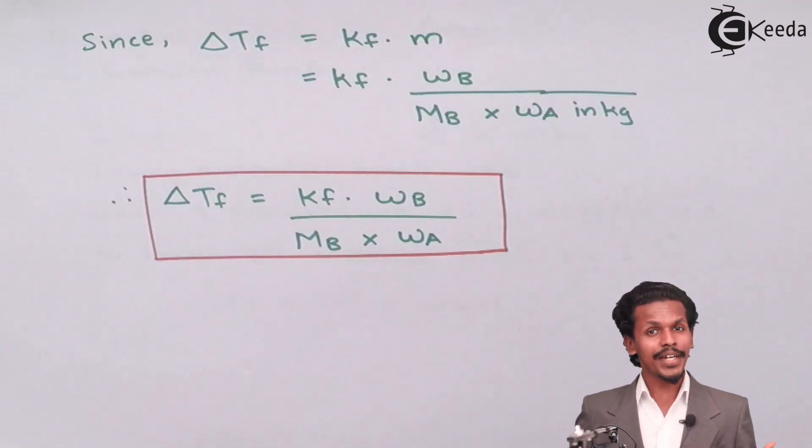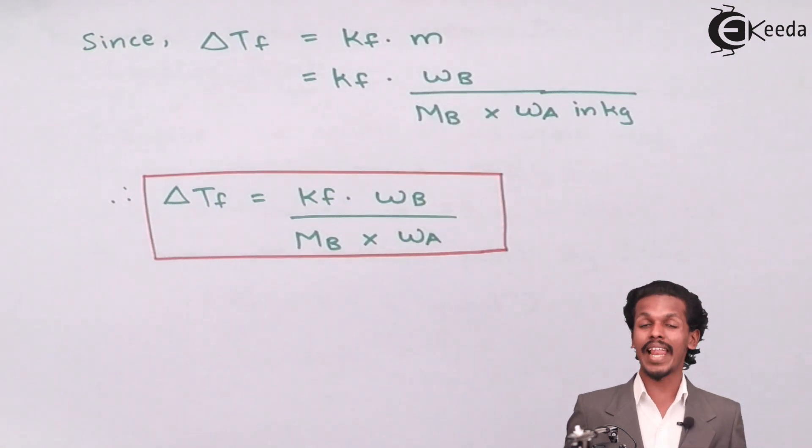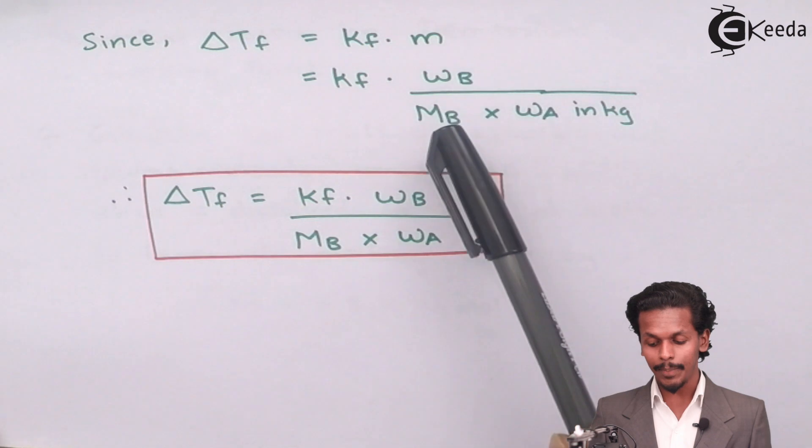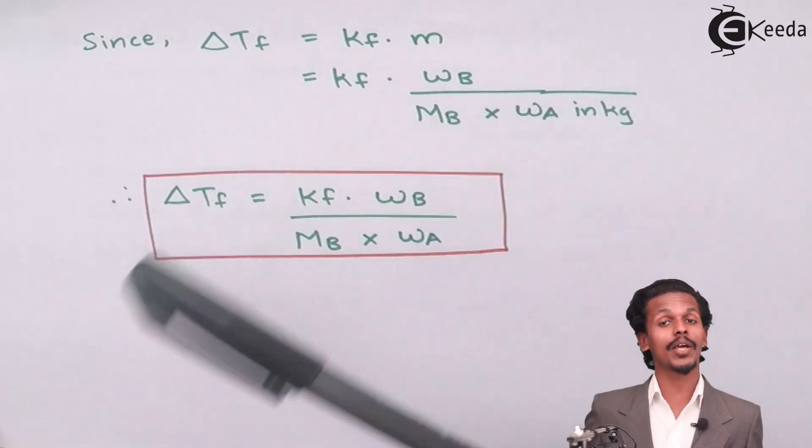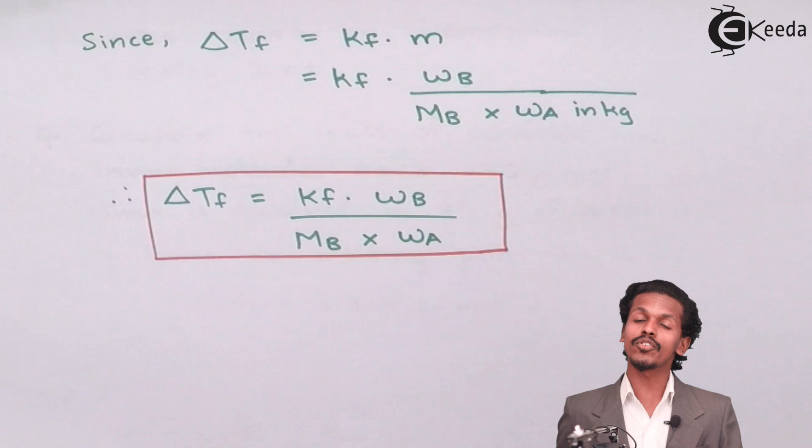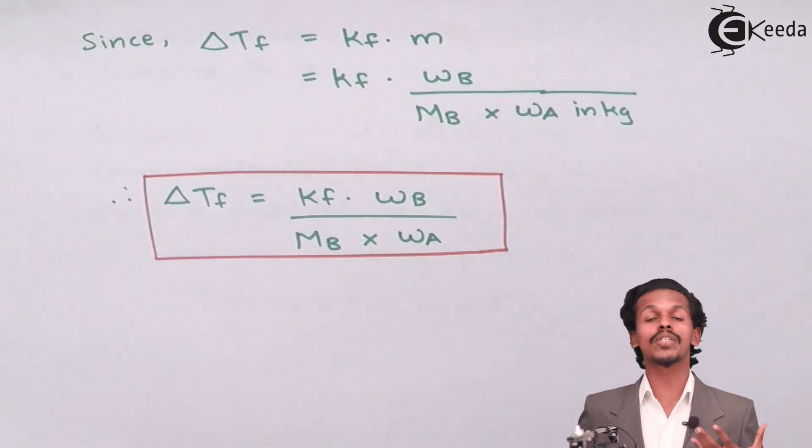So, since we already know that delta Tf is equals to Kf into m, but the small m is nothing but the molality. So, the molality can be expressed in the form of Wb divided by Mb into Wa, where Wb is nothing but the mass of the solute which is dissolved in the solution. Mb is the molar mass of the solute which is dissolved in the solution. And Wa is the weight of the pure solvent which is present in the solution.